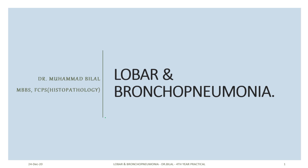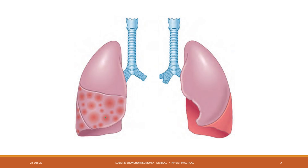Today we are going to talk about the morphology of lobar and bronchopneumonia briefly. Generally, four morphological stages of lobar pneumonia are described — to some extent they apply to bronchopneumonia as well, but mostly they define the main stages of lobar pneumonia. These are morphological stages, not clinical stages, and they are: congestion, red hepatization, gray hepatization, and resolution.